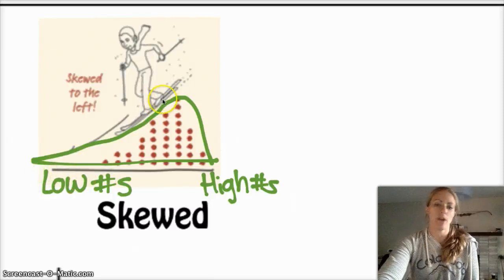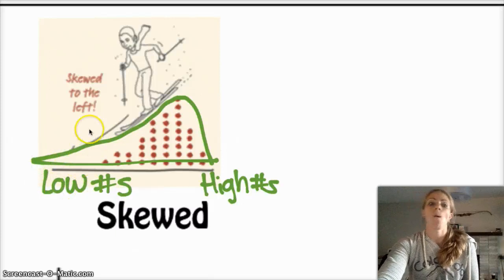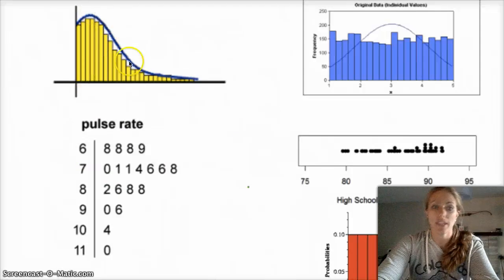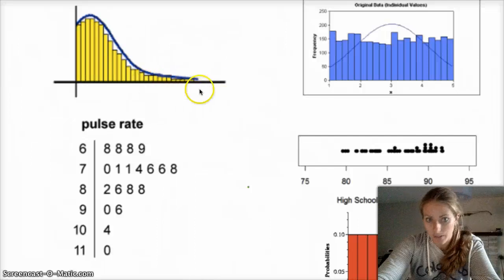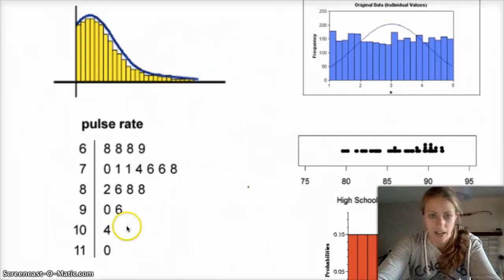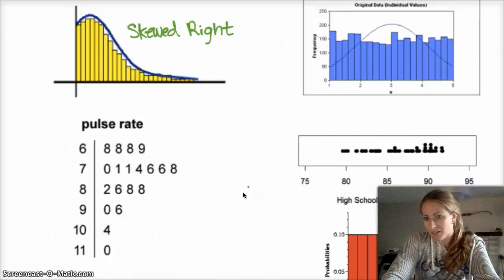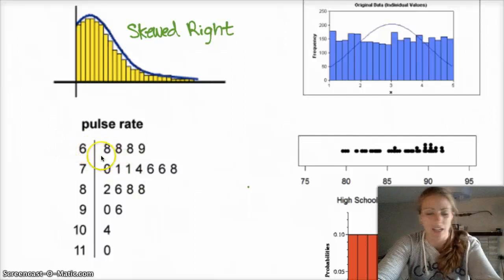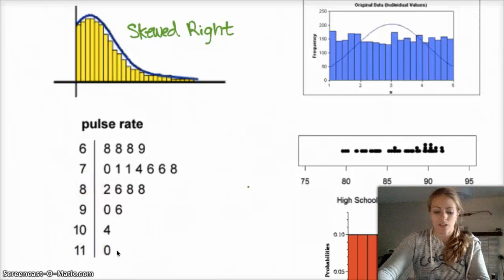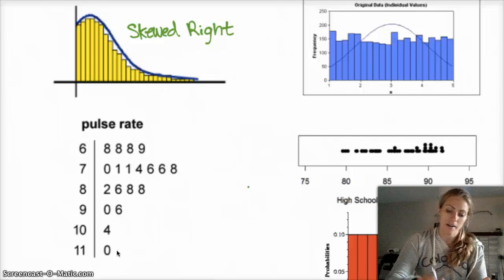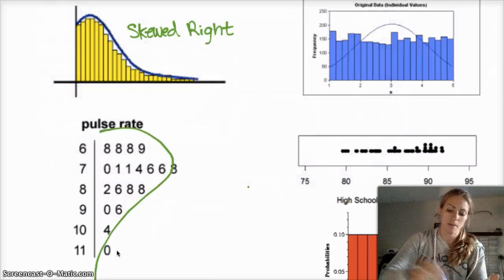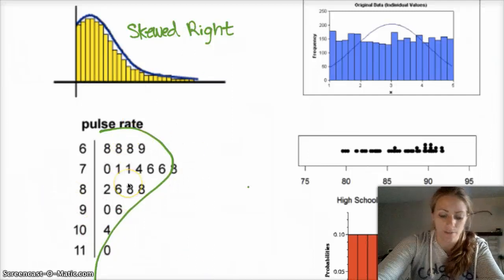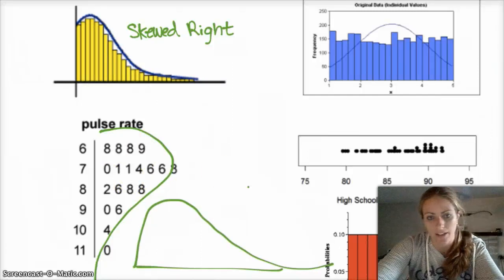If you have extreme values for the low numbers, it's skewed left. If you have extreme values on the high numbers, it's skewed right. This histogram is skewed right because the extreme values are on the right-hand side with the higher values. It's a little harder to see on a stem plot, but you look at the lower numbers - 6, 8 is lower than 11, 0 - and you have a chunk of data on the lower number side with extreme values on the higher side. This is also skewed right.